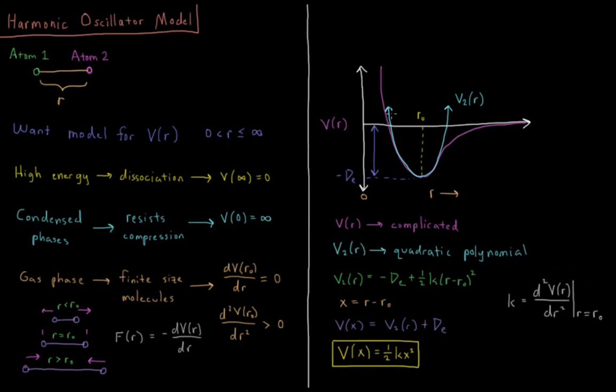So our model for our vibrating atom is going to be that the potential energy it feels is a parabola, 1/2 Kx squared. So it's going to prefer to sit at the minimum, which we have moved to be x equals 0, r equals r0. And the stiffness of this parabola, how tight or weak that parabola is, is determined by this so-called spring constant K.